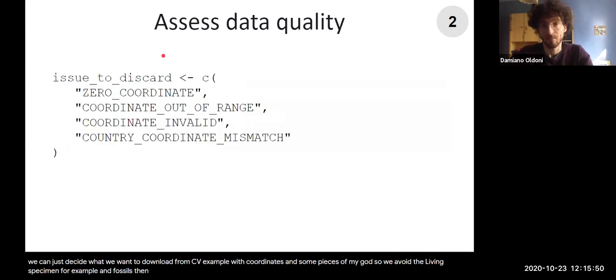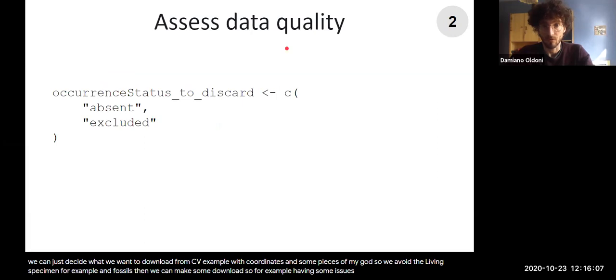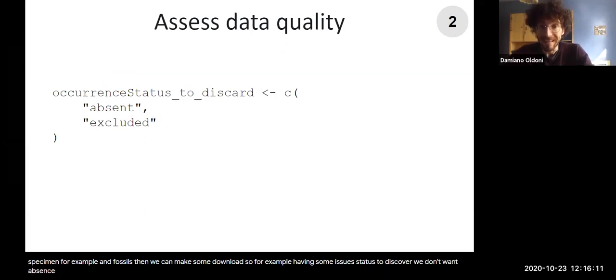Then we can make some processing after the download. So for example, discovering data with some issues. So data with our coordinates and so on, out of range, coordinate invalid, country coordinate mismatch, or occurrence status to discard. For example, we don't want absences or excluded data in a data cube that speaks only about presences.